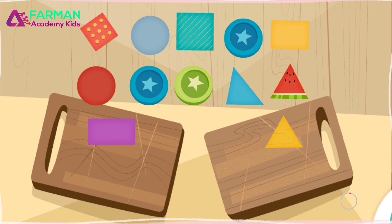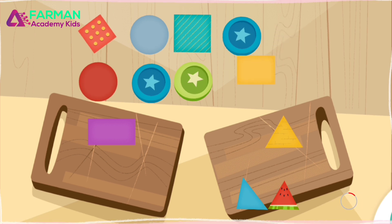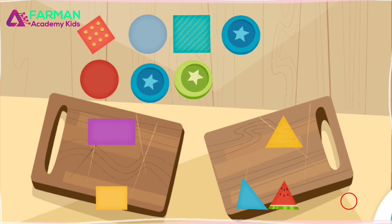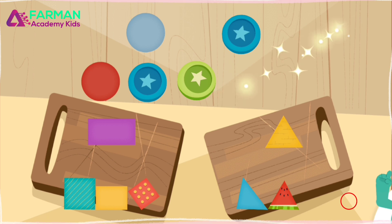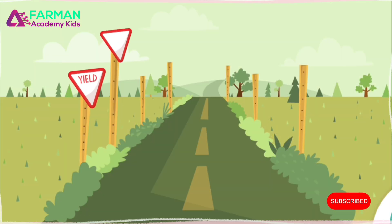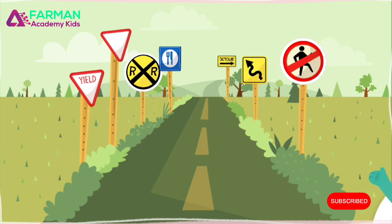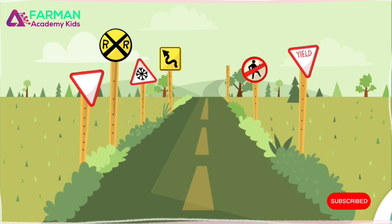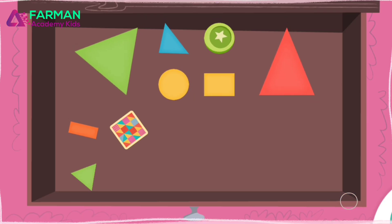Tap all the signs that are circles. Good job! Tap all the signs that are rectangles. Oops! Try again. Good thinking! Tap all the circles. Good work! Find all of the rectangles. Oops! Find all of the rectangles. Great!